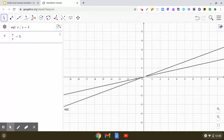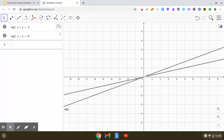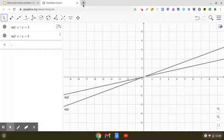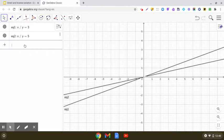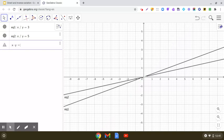Now let us explore the graph of an equation representing inverse variation. So what is that? x into y equals constant. Let us take x into y equals 3.